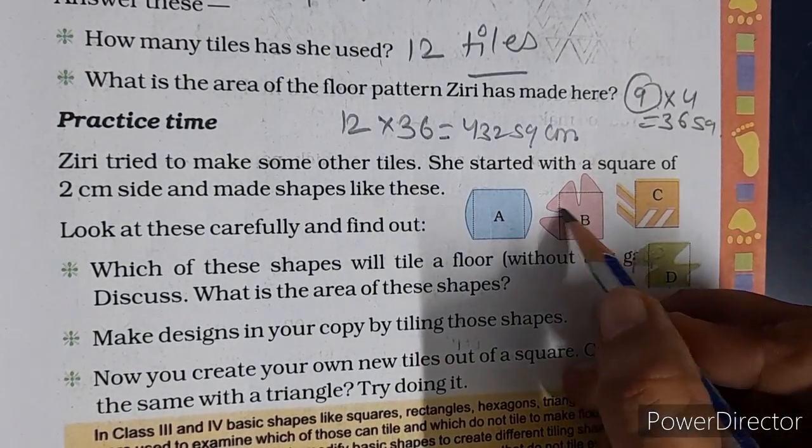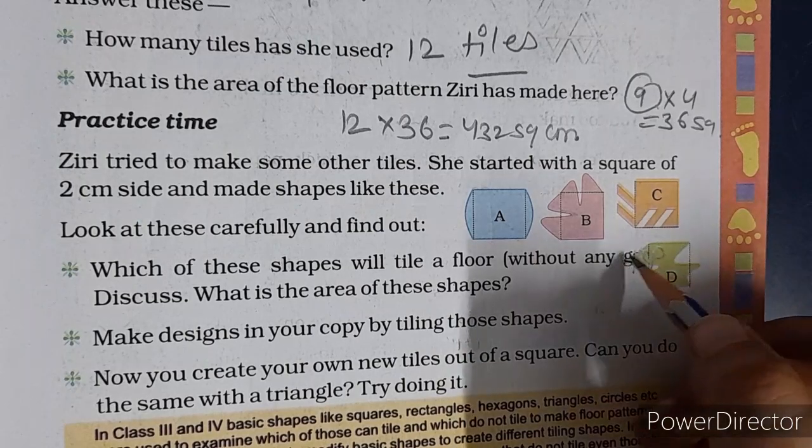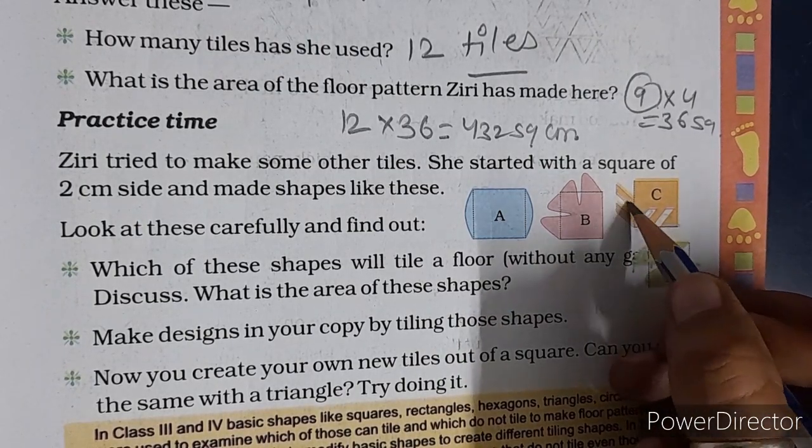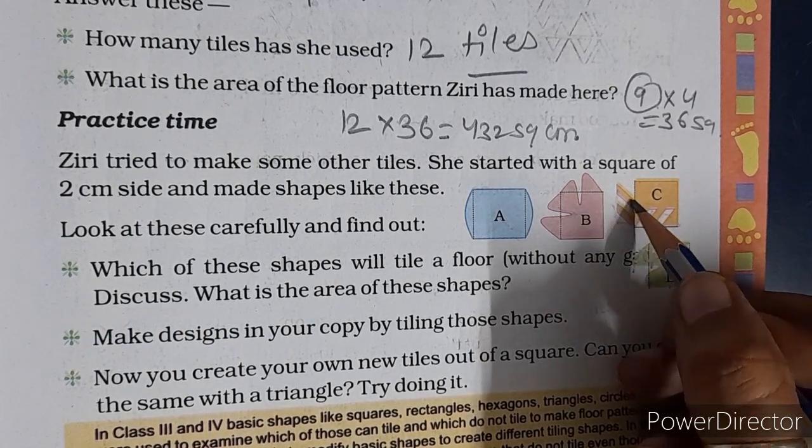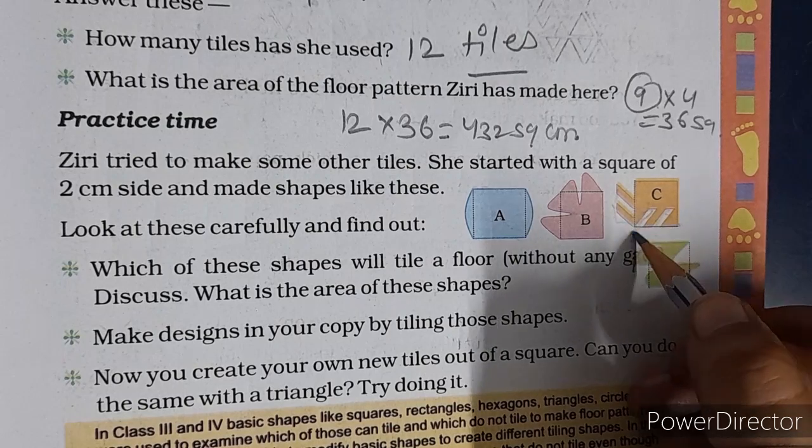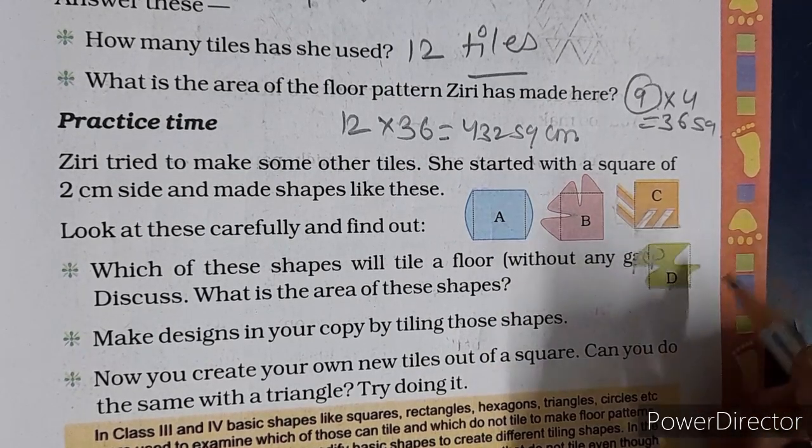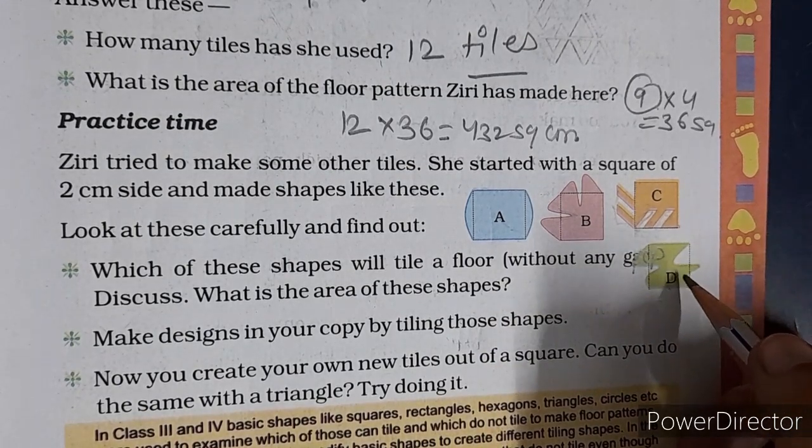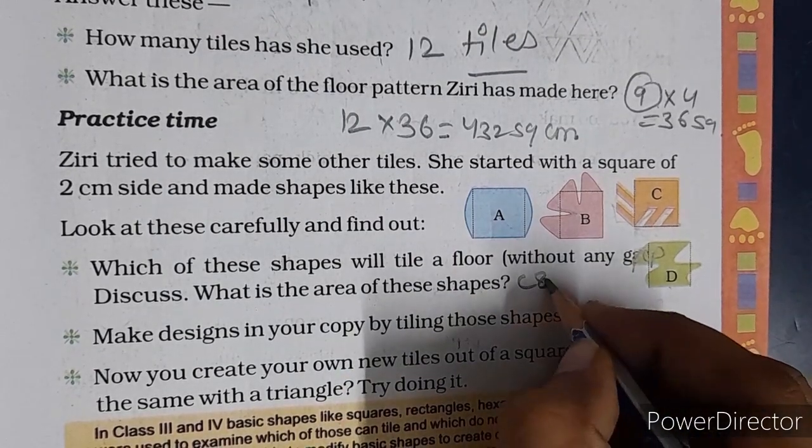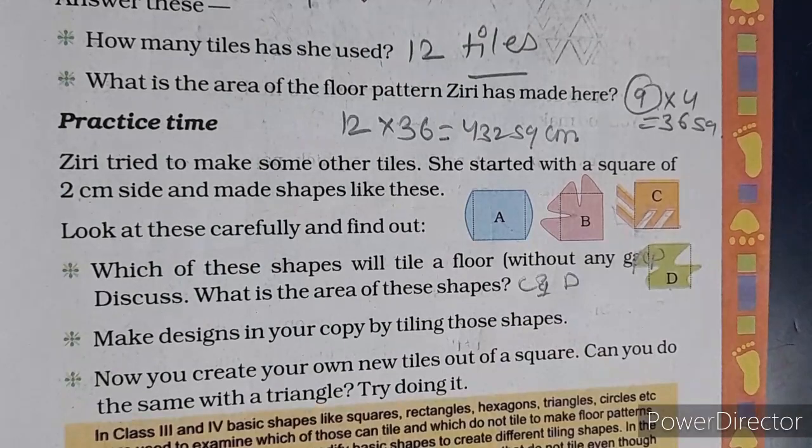You can see here. So this is the design. If you have two designs, then this is the design. How will it be? If you have two designs, then it will be inside. So there will be no gap, same as it is here. So we will write here. Next, make design in your copy by tiling those types.